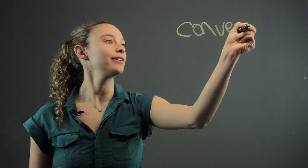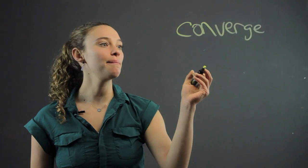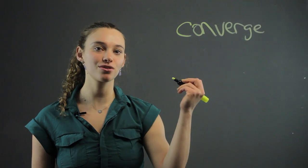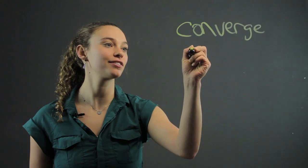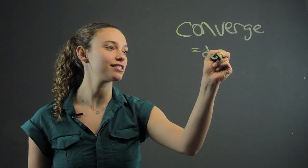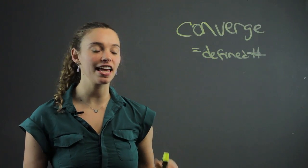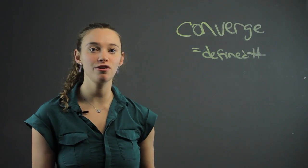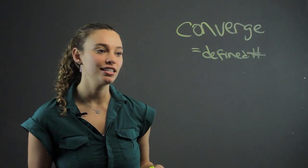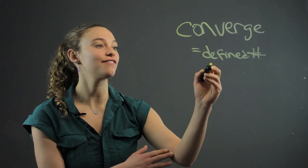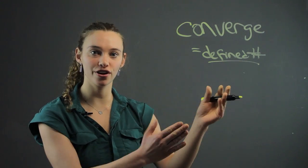We say we converge towards a number when that number is going towards an actual defined number. So that equals defined number. That can be something like 5 or it can be 218.023, right? It's a defined number. You converge towards it.